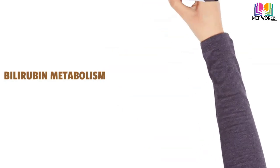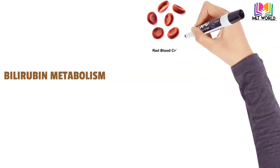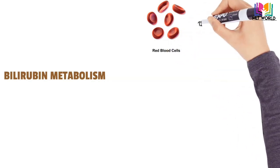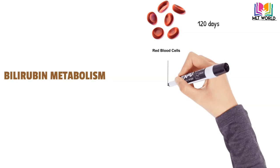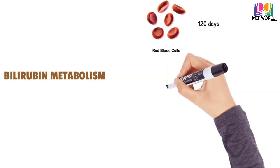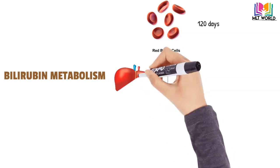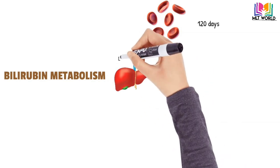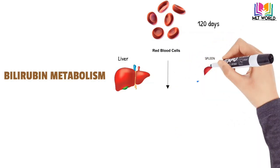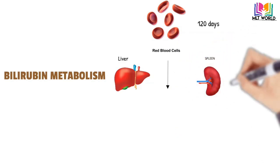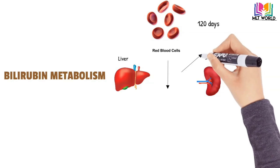Bilirubin metabolism starts with red blood cells, one of the most important cells in our body. Red blood cells have an approximate lifespan of 120 days, and after 120 days they will be destroyed in organs like the liver and the spleen, which contain numerous macrophages. So macrophages will destroy the red blood cells in the liver and spleen.